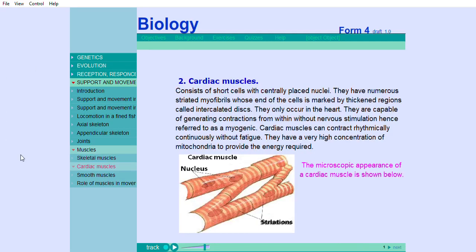Cardiac muscles consist of short cells with centrally placed nuclei. They have numerous striated myofibrils, whose ends are marked by thickened regions called intercalated discs. They only occur in the heart. They are capable of generating contractions from within, without nervous stimulation,